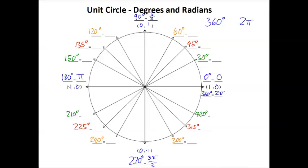Now let's divide each quadrant in half as we did before. Going from 0 to π/2 and dividing by two, we get π/4. Adding π/4 to π/2 gives us 3π/4. Adding another gives us one whole π. Adding another π/4 gives us 5π/4. Adding another gives us 6π/4, which simplifies to 3π/2. Adding another π/4 gives us 7π/4. And adding the last π/4 gives us 8π/4, or simply 2π.